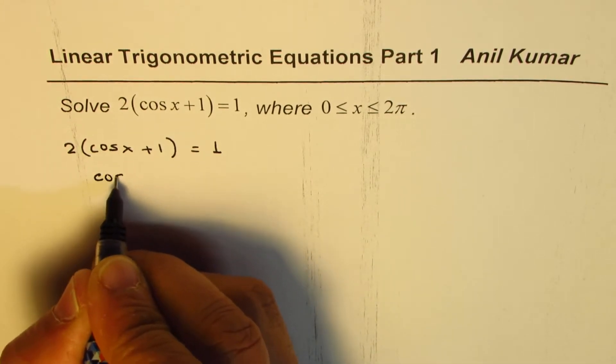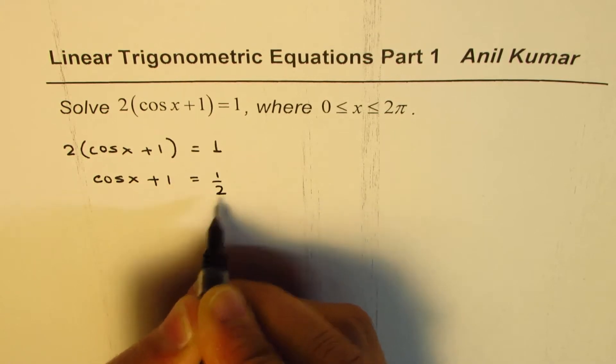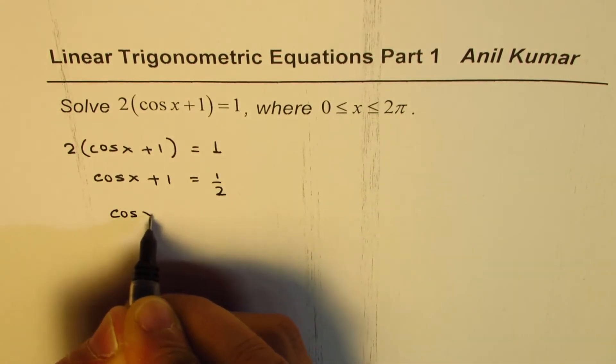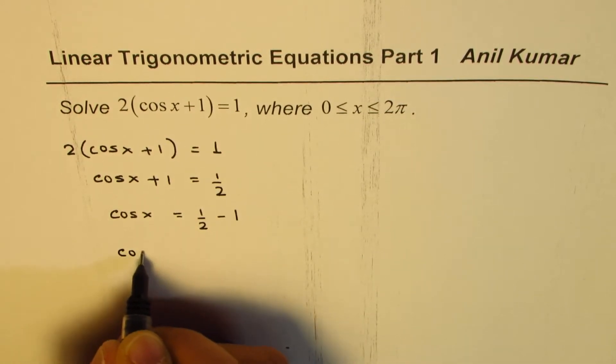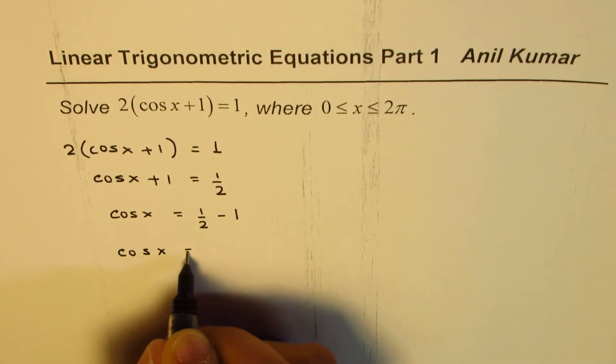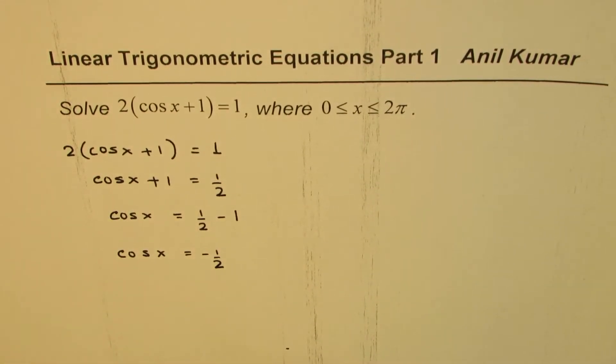So we get cos x + 1 = 1/2, or cos x = 1/2 - 1. Solving, we get cos x = -1/2.